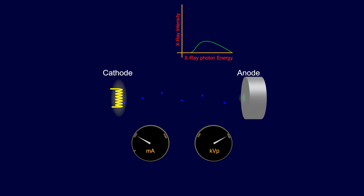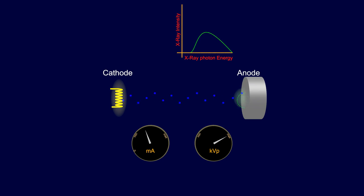MA, or milliamperage, is the quantity of electrons that are boiling off the cathode. KVP is the speed at which the electrons reach the anode.